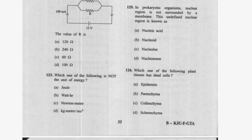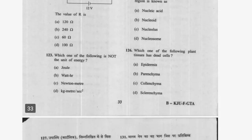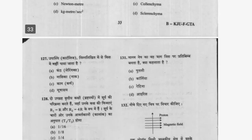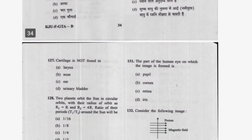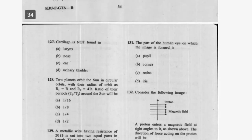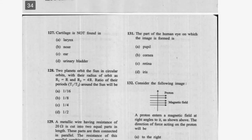Question 116: Which plant tissue has dead cells? Option D is correct — sclerenchyma. Question 117: Catalase is not found in which organ? The right answer is option D — the urinary bladder.